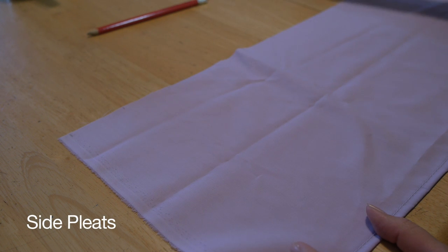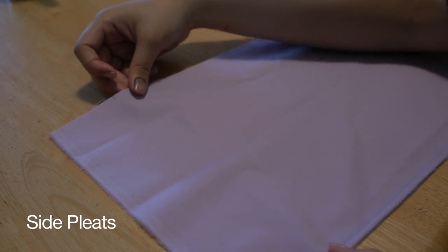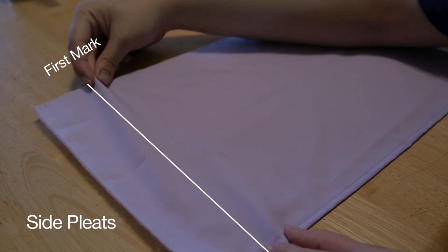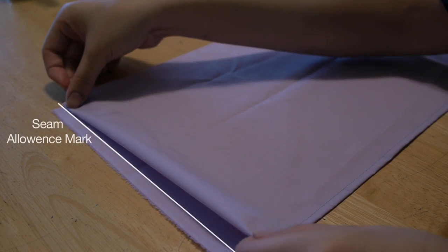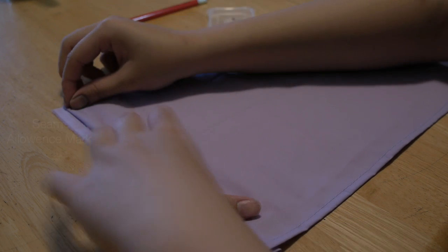We are going to start off with side pleats. Pinch up at the first mark and bring it over to your seam allowance mark. Pin your pleat into place.